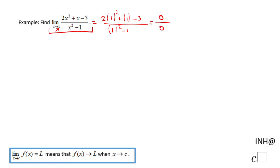0 over 0, which is an undefined form. Therefore we have to use an algebraic technique to find this limit, and the algebraic method you can use for finding this limit is factoring.